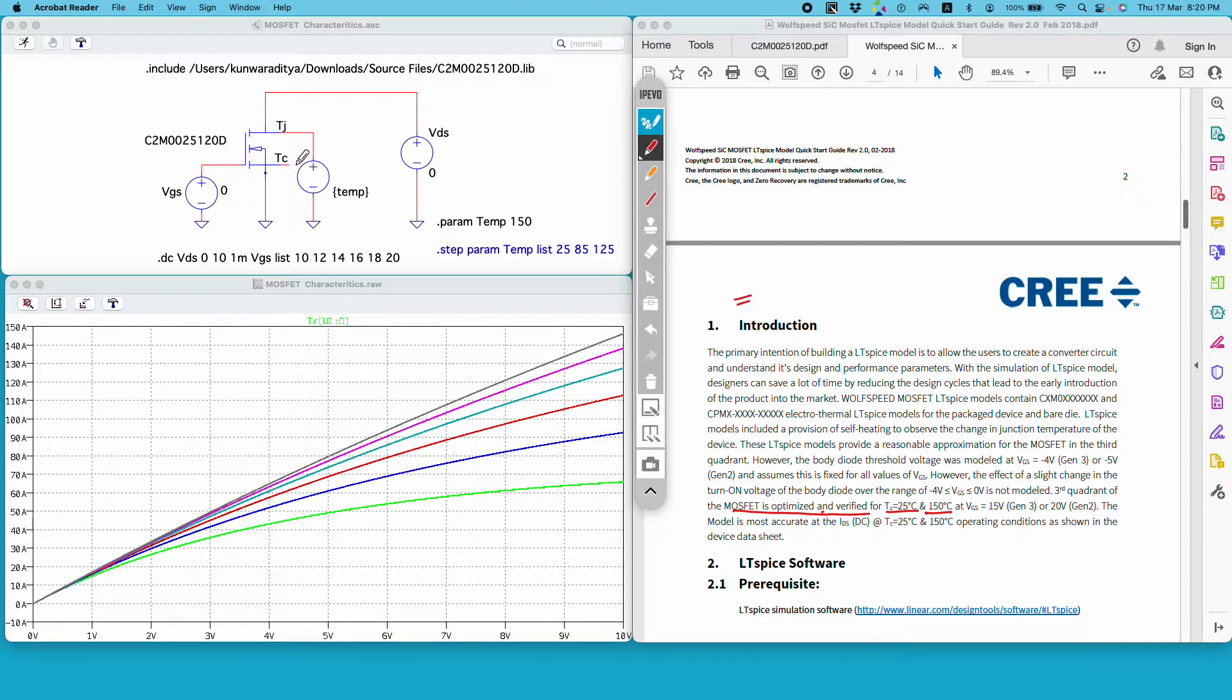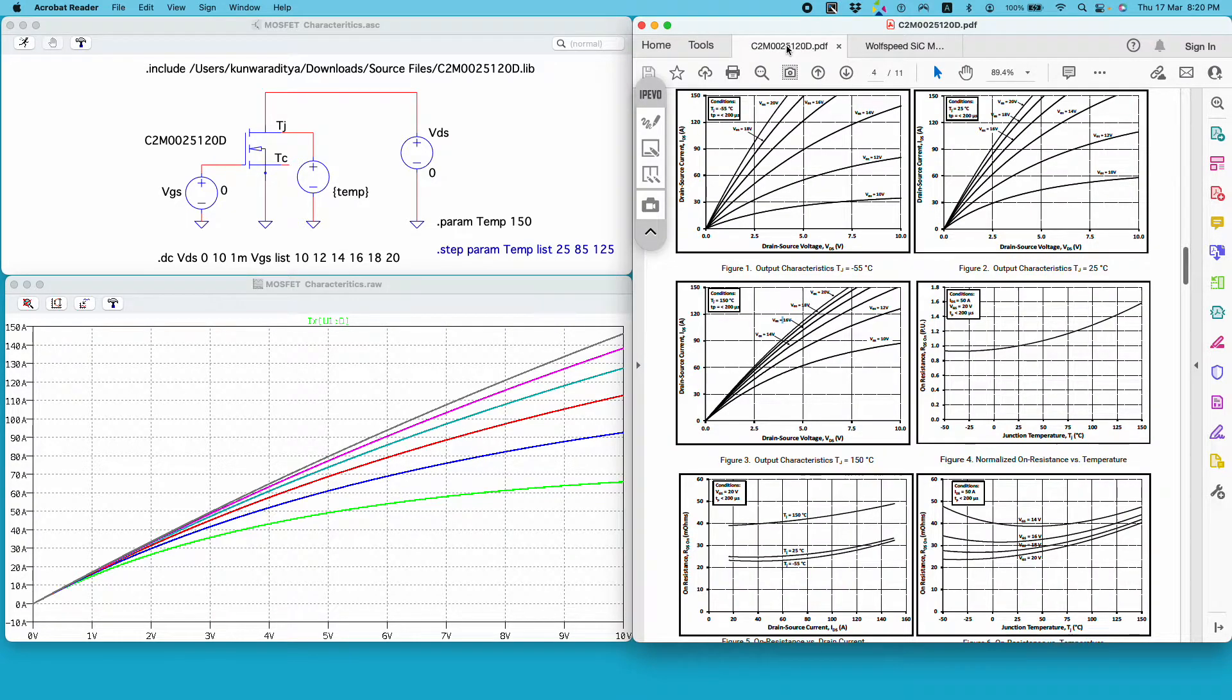But nevertheless the idea here is to learn how to use such kind of MOSFET model which has the case temperature and junction temperature terminal in addition to your drain, source and gate terminal. This is the x-axis, VDS, and y-axis is the IDS or ID.